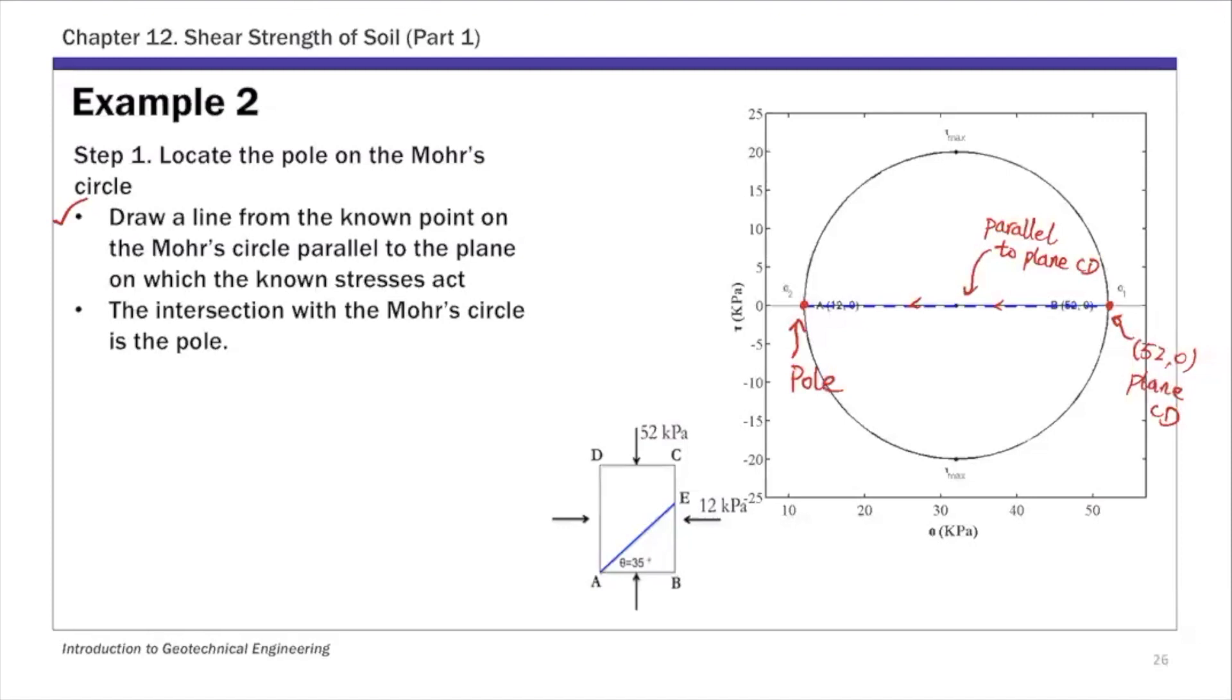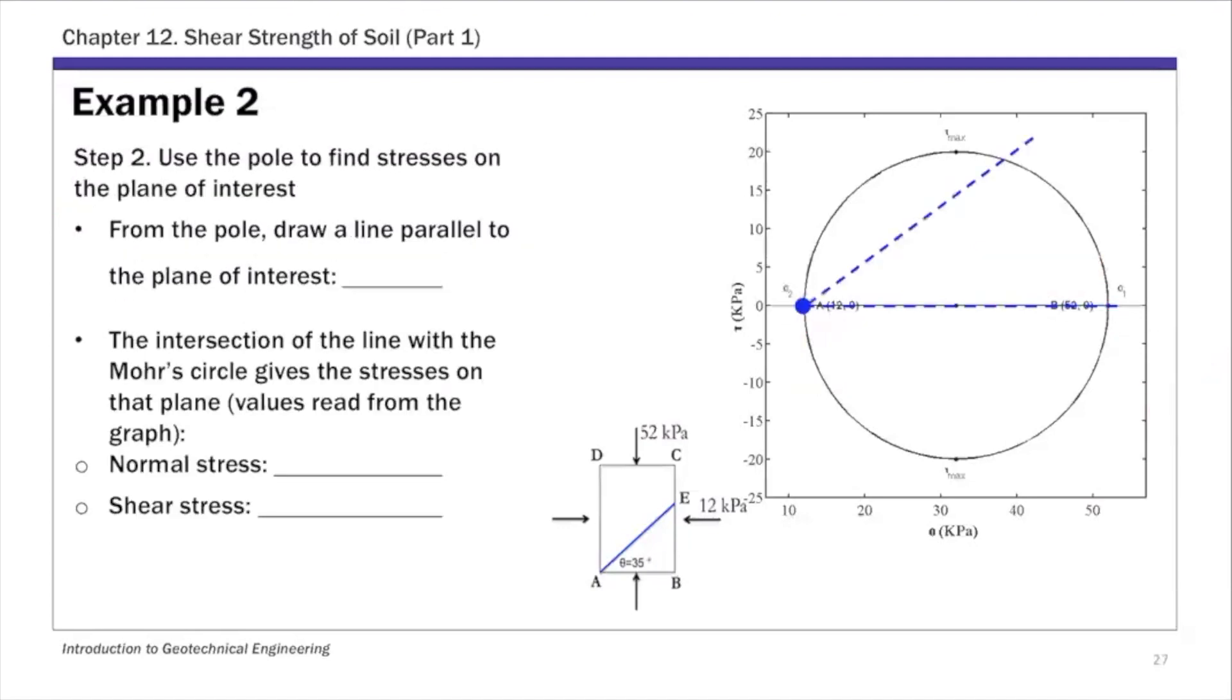Once you locate the pole, the next step: from the pole, draw a line parallel to the plane of interest. For this example, we need to find the normal and shear stress on plane AE. That's our plane of interest, 35 degrees from horizontal direction.